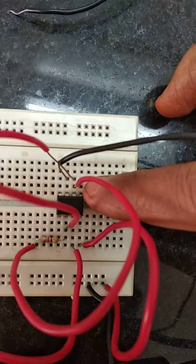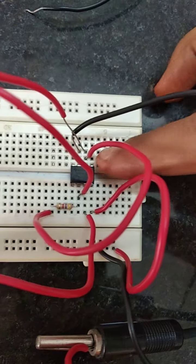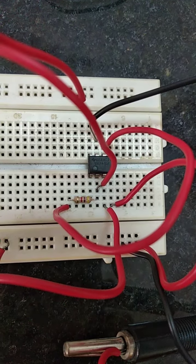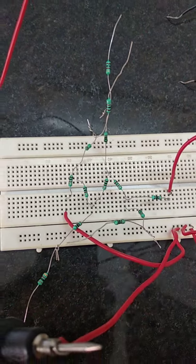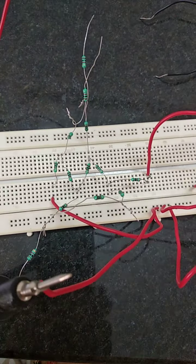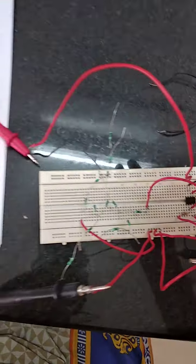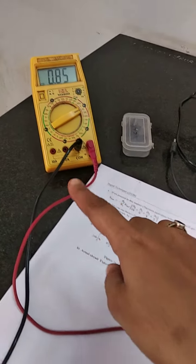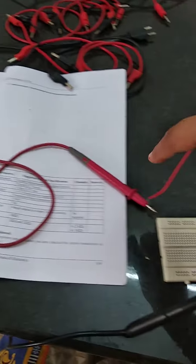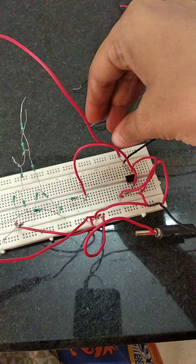See here on the breadboard I have implemented this. This little IC here is IC741, that is op amp IC. And these resistors are used for the ladder. Then output we will see on this DMM.